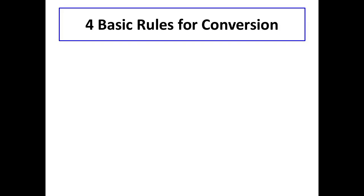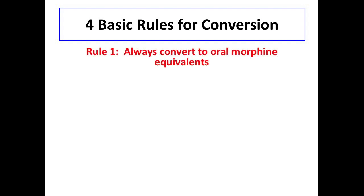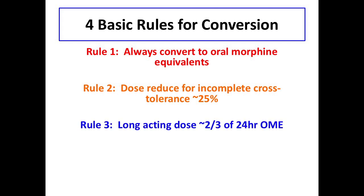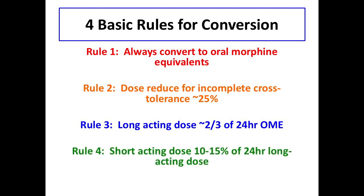We have delineated four basic rules for conversion. Rule one: always convert to oral morphine equivalents. Rule two: if switching from one opioid to another, dose-reduce the OME total by about 25% to account for incomplete cross-tolerance. Rule three: calculate the long-acting dose, which is equivalent to about two-thirds of the 24-hour OME. Rule four: calculate the short-acting dose, which is approximately 10% to 15% of the 24-hour long-acting opioid dose.